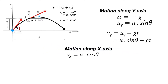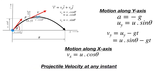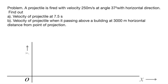Using the velocity in vertical and horizontal directions at any instant, we can find the velocity of the projectile at any point on its trajectory. The direction of velocity is given by the ratio of vertical velocity divided by horizontal velocity. Now let's try a problem based on what we have learned.